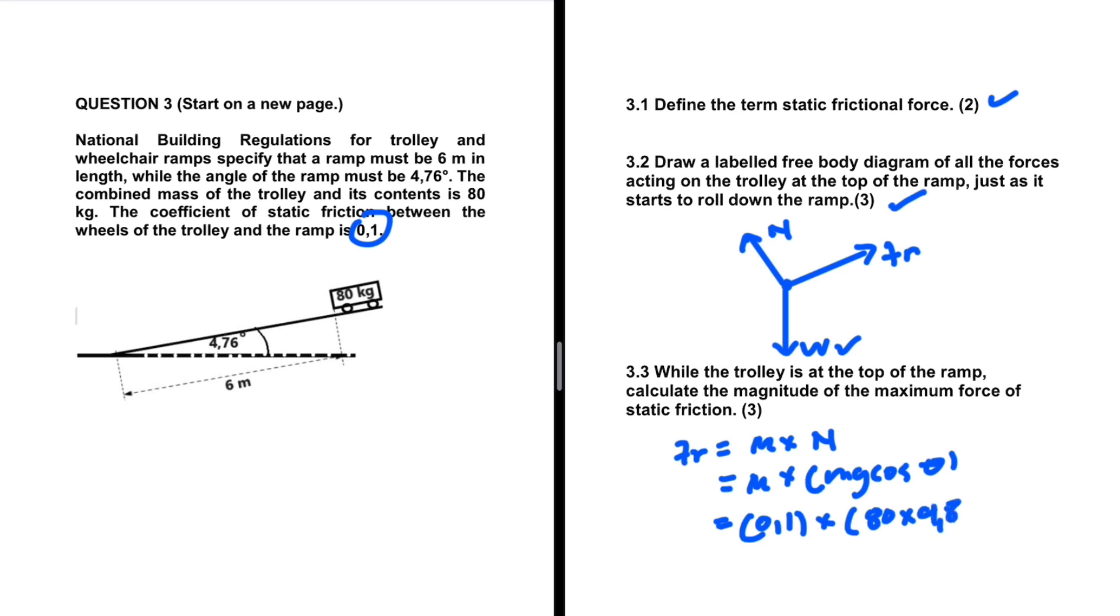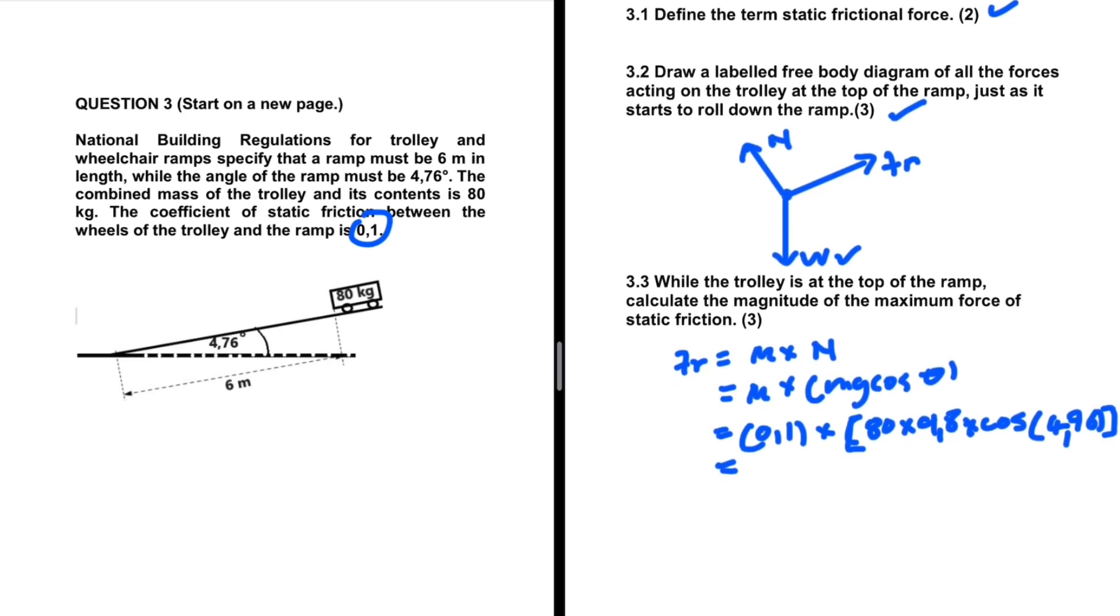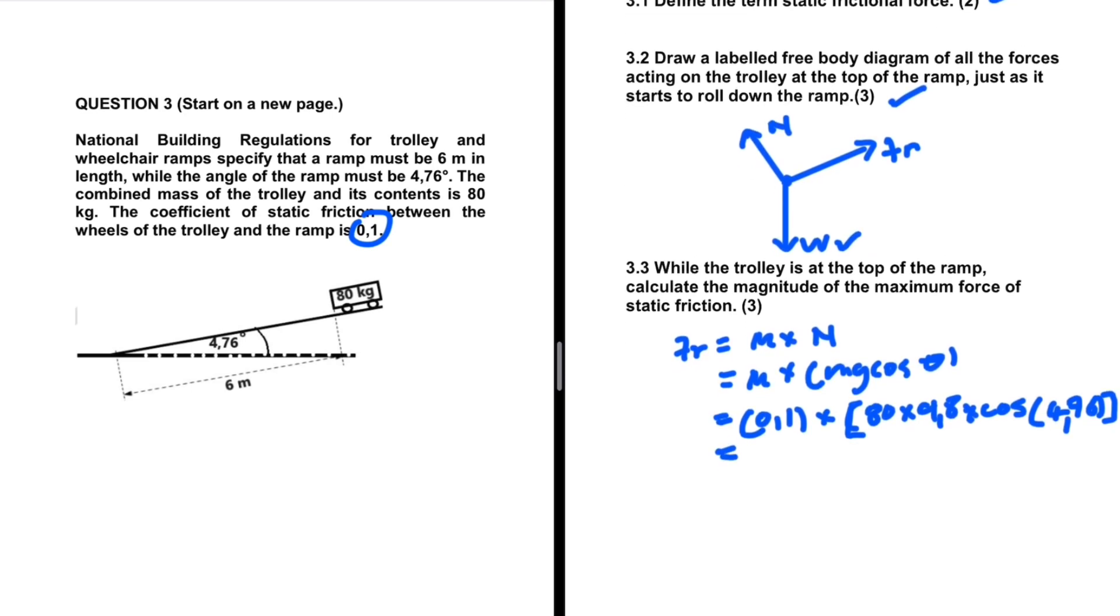Gravitational acceleration 9.8 multiplied by cos of, let me open brackets, cos of 4.76 degrees. Now it's just a matter of putting that in your calculator and you shall get 78.13 newtons. Sometimes when you substitute, you can make a mistake. So if you can, well you always can, substitute twice in the calculator.